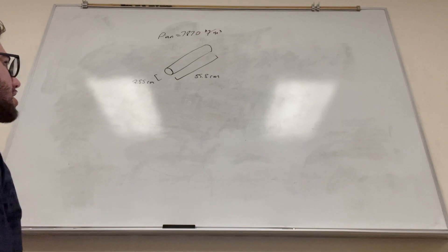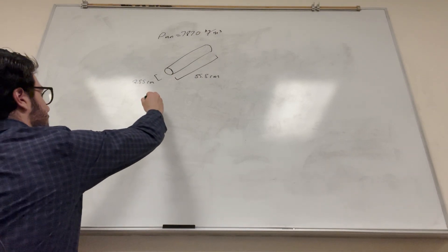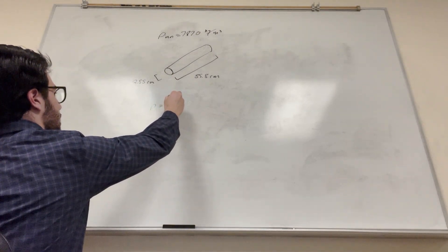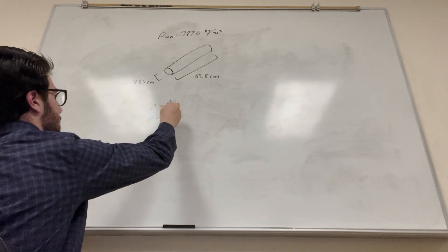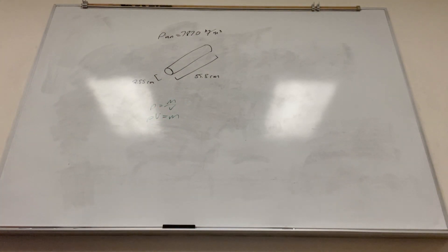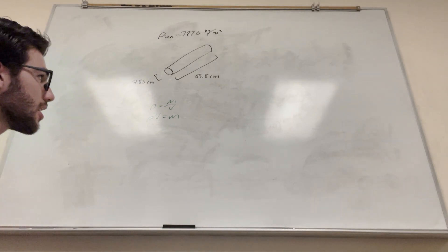So here we go, we have the dimensions. We know that density is equal to mass divided by volume, so we're trying to find mass. We're gonna need to multiply density times volume to get the mass. So we need the volume, because we have the density, we want the mass, and we don't have the volume yet, so we can calculate the volume.